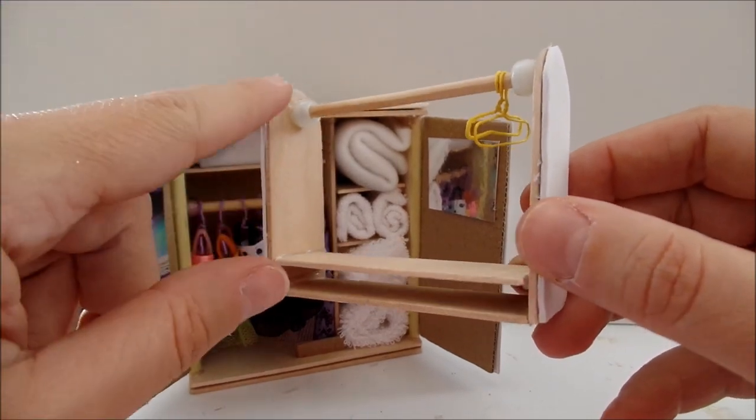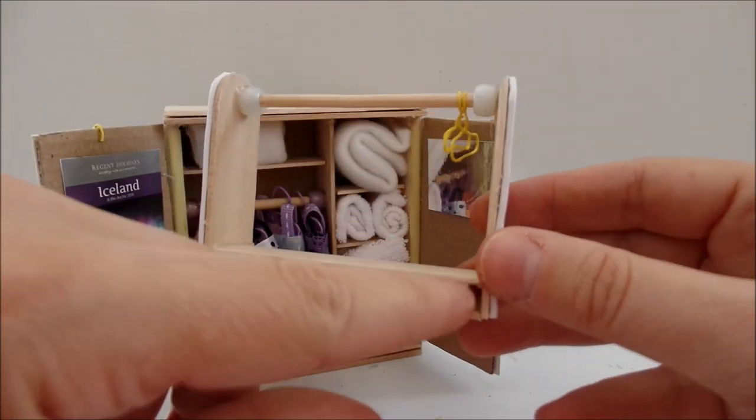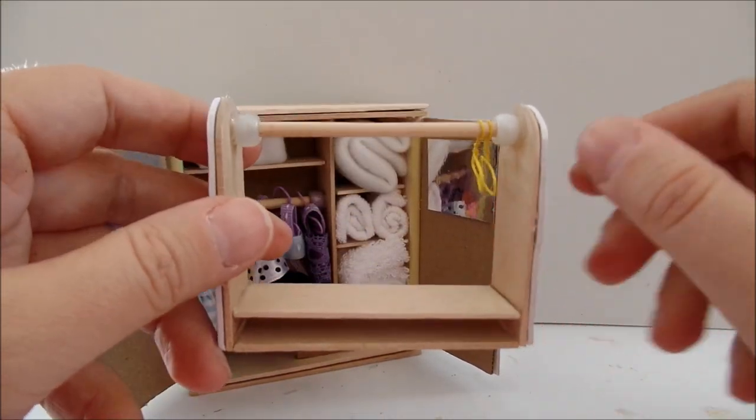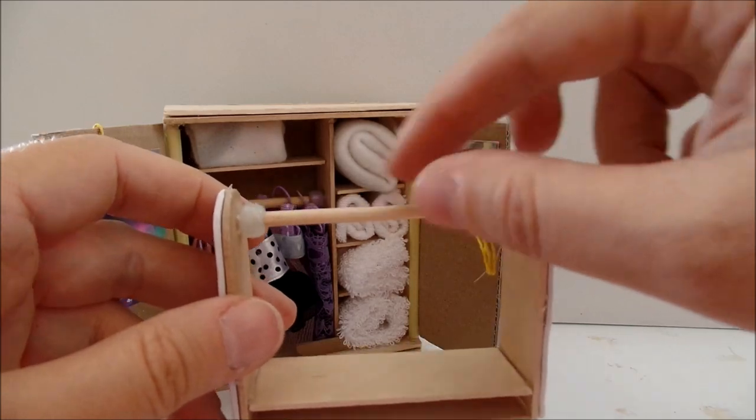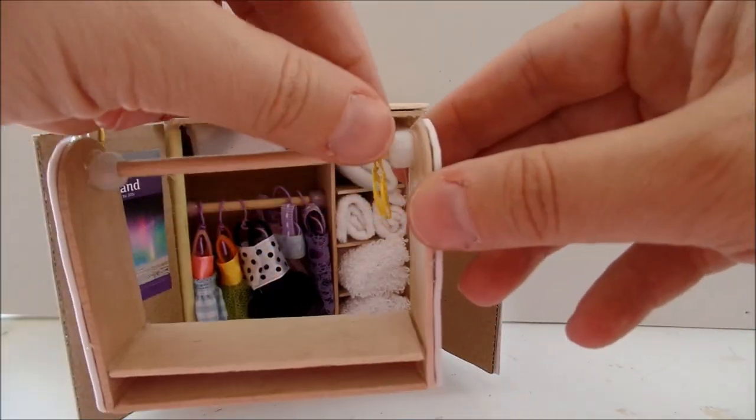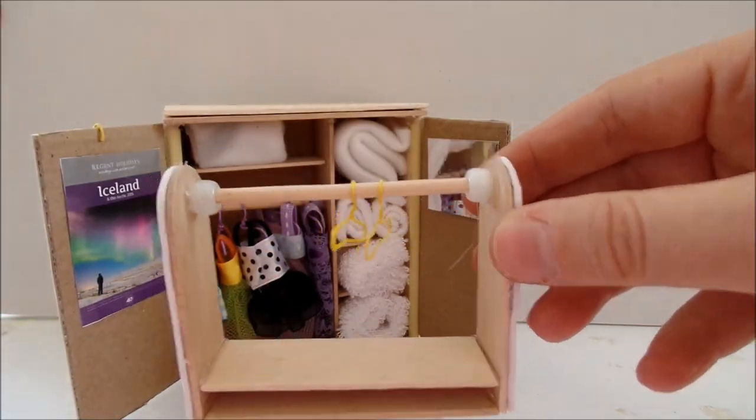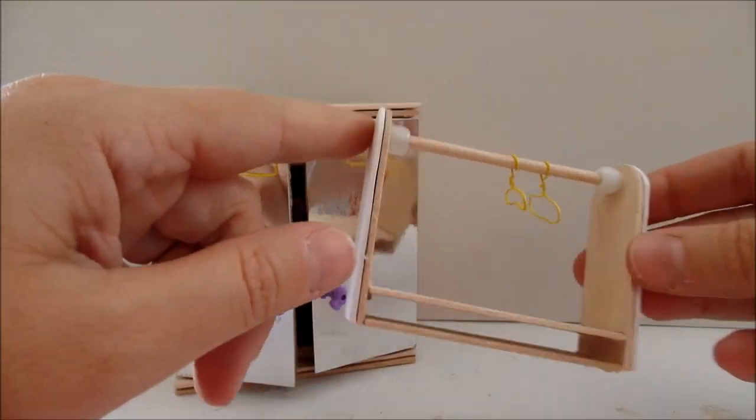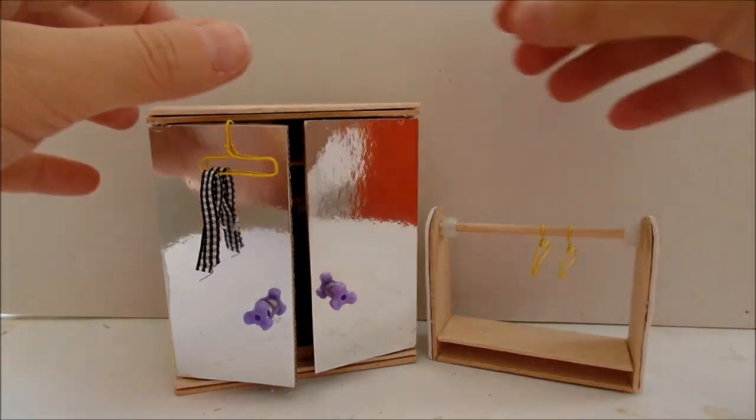Two pieces of jumbo popsicle sticks on the sides, twin-sided wooden dowel, two beads just as here, and the hangers. That's a quick craft. And here I simply glued a piece of foam paper for decoration.